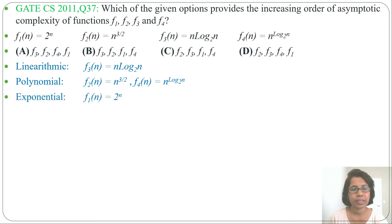f1 of n is exponential. It is 2 power n. And we know that linearithmic order of growth is less than polynomial and polynomial order of growth is less than exponential. But problem is in polynomial there are two functions. One is n power 3 by 2, another is n power log n base 2. Now compare these two functions. From these two functions which have higher order of growth and which have lower order of growth. Both base is n, power is 3 by 2 and power is log n base 2.